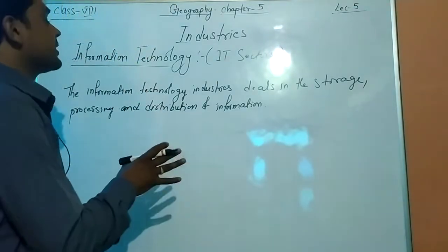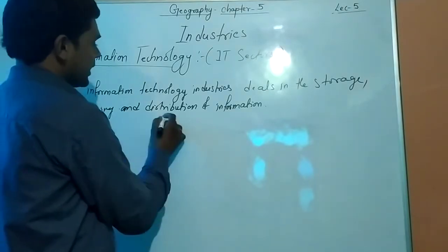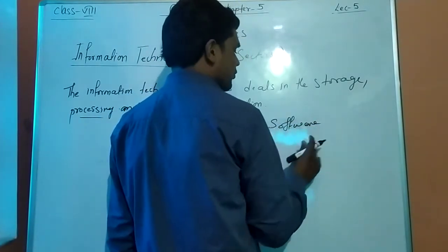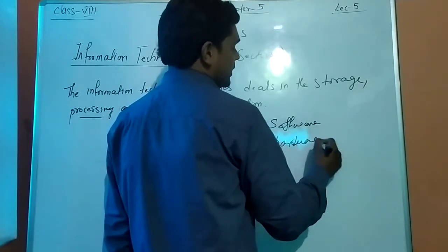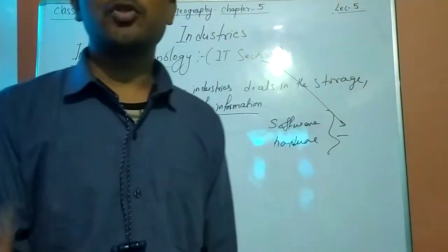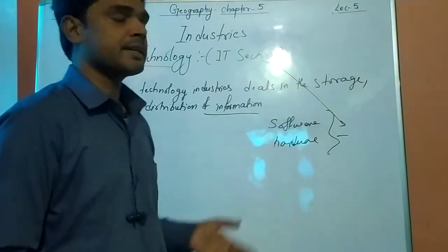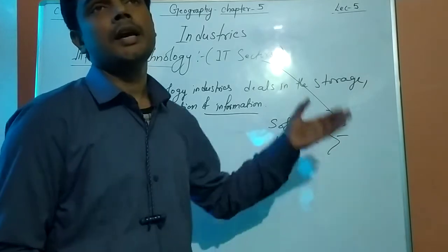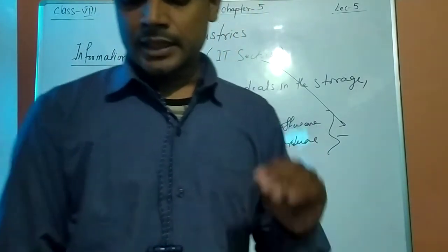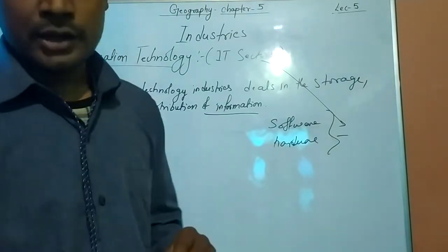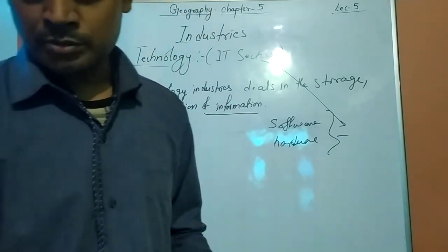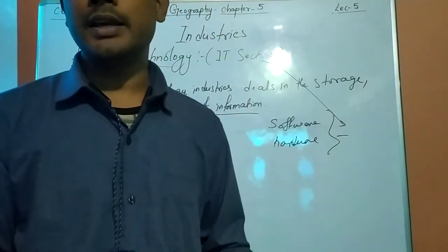Basically, these IT industries deal with storage, processing and distribution of information. For example, the software and hardware we use, all come from the IT sector. After California and Bangalore, there are also many new hubs in India like Mumbai, Delhi, Hyderabad, Chennai, Gurgaon, Pune, Thiruvananthapuram, Kochi, Chandigarh. These are hubs in the IT sector.